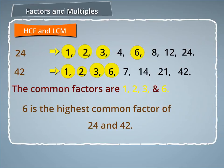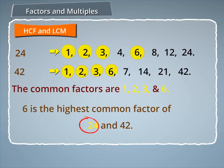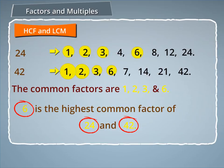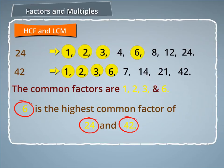The greatest number that can divide both 24 and 42 is 6. So 6 is the Highest Common Factor of 24 and 42.